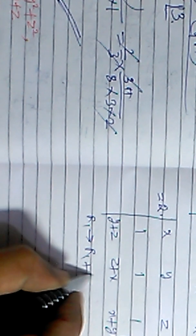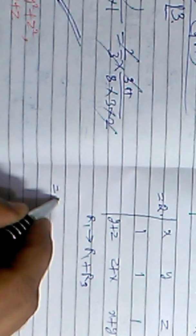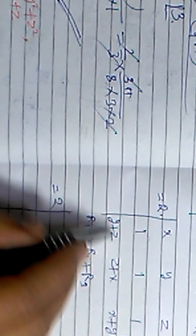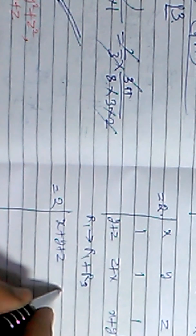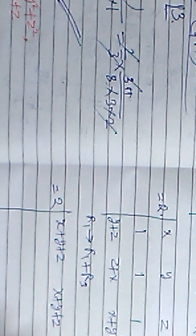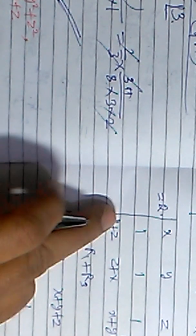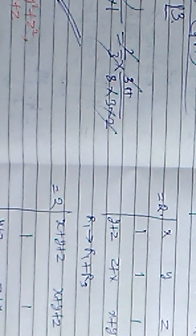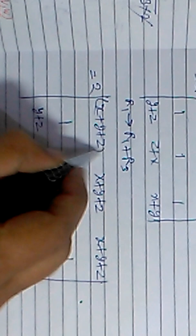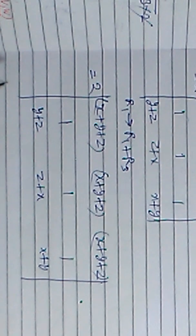Now we apply the row operation R1 → R1 + R3. Adding the third row to the first row: x + (y+z) = x+y+z, y + (z+x) = x+y+z, z + (x+y) = x+y+z. So the first row becomes x+y+z, x+y+z, x+y+z. The second row remains 1, 1, 1 and the third row remains y+z, z+x, x+y.